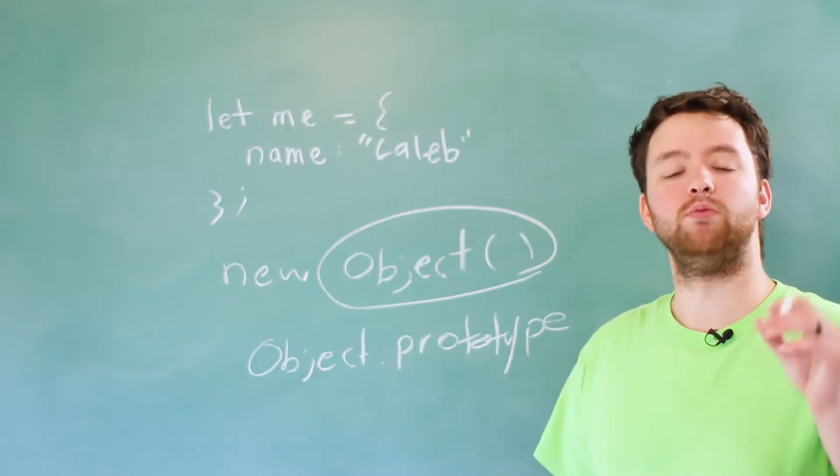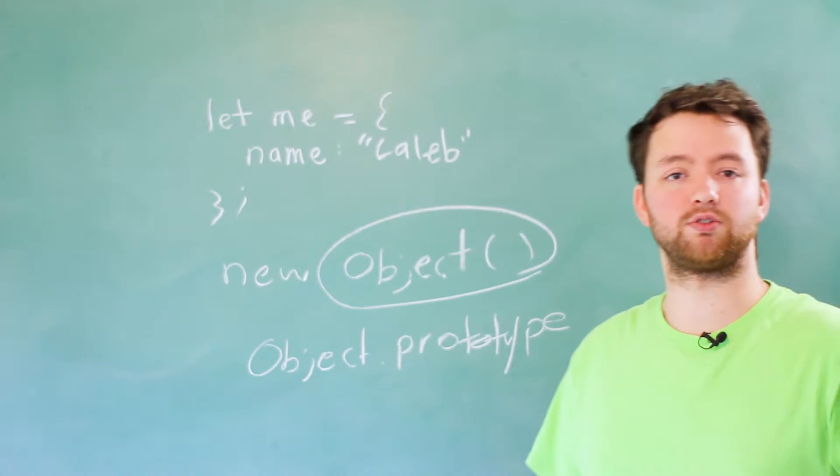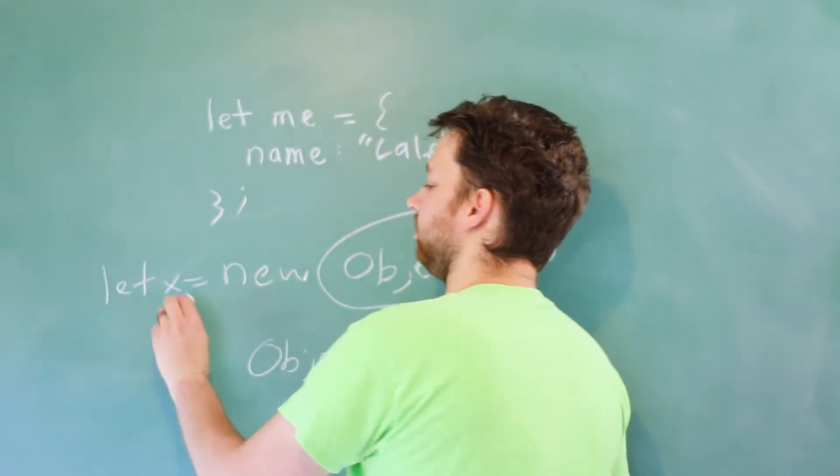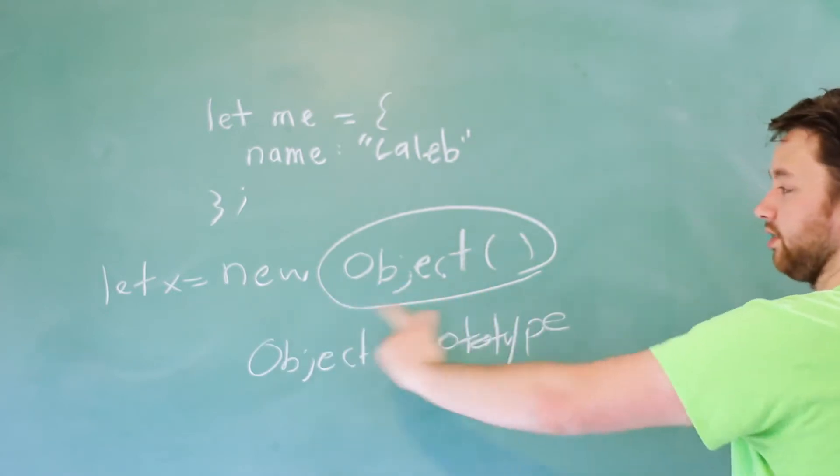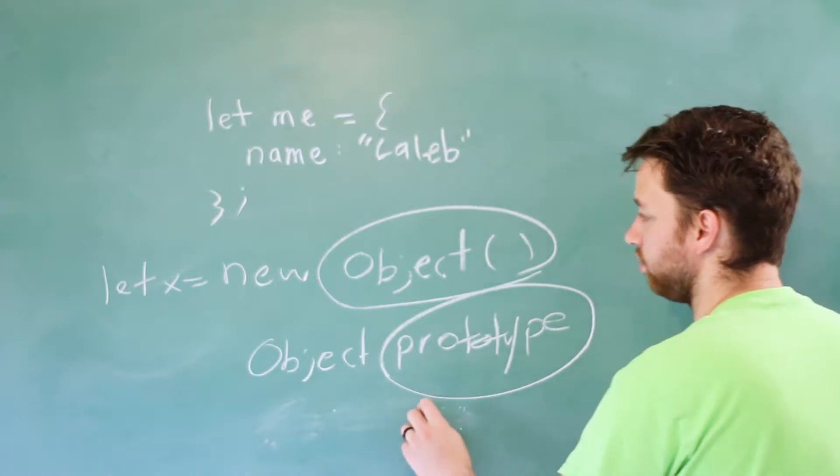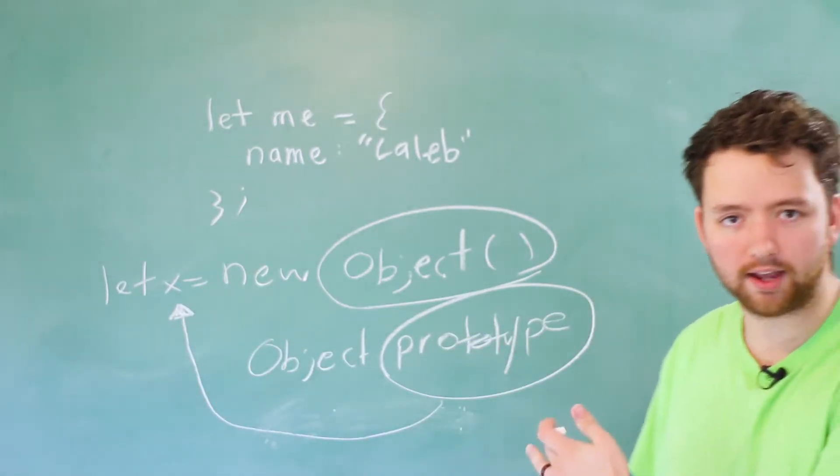Now, why is this important? Well, when we create a new object using a constructor, the prototype is transferred to that new object. So for example, if we say let x and assign a new object to this call to this constructor, this prototype is going to be transferred to the prototype of this new object. In this case, it's called x.